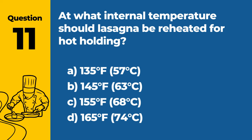Question 11: At what internal temperature should lasagna be reheated for hot holding? A. 135°F (57°C). B. 145°F (63°C). D. 165°F (74°C). Answer: D. 165°F (74°C). Lasagna should be reheated to an internal temperature of 165°F (74°C) for hot holding to ensure it is safe to eat.